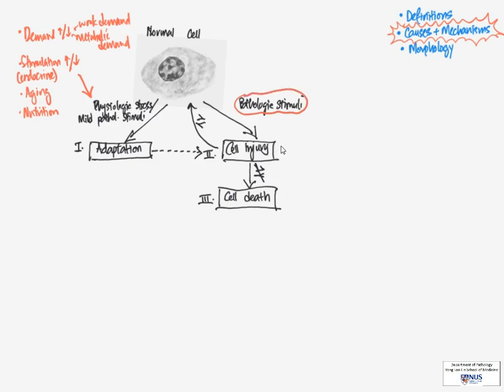Now, in terms of pathologic stimuli, there are many categories of stimuli. One very important stressor to the cells would be hypoxia. So this is decreased oxygen supply.